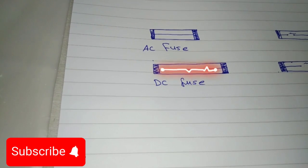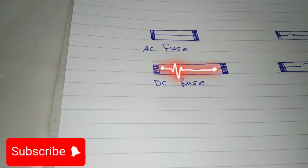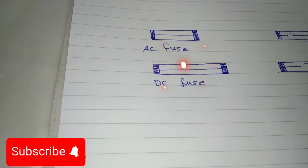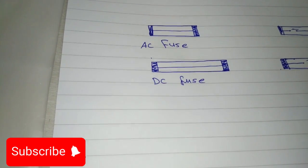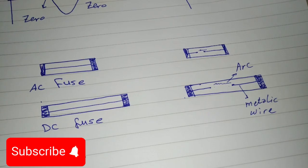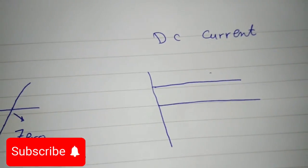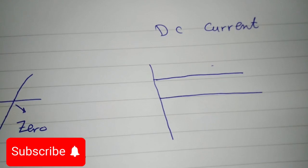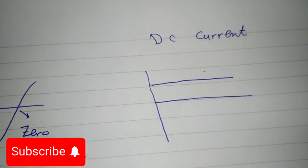First off, let's talk about the battlefield: AC vs DC. AC, or alternating current, is like a dance, moving back and forth, changing its direction and intensity. Now, DC, or direct current, is the straight shooter, moving in one direction, steady and constant.